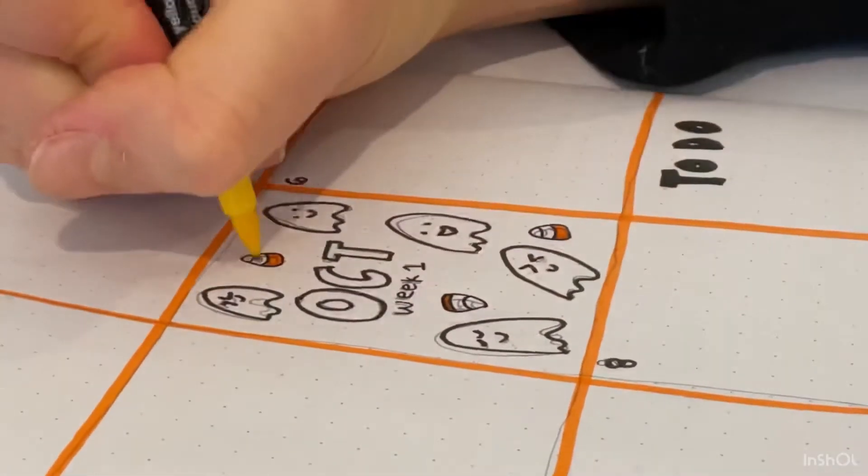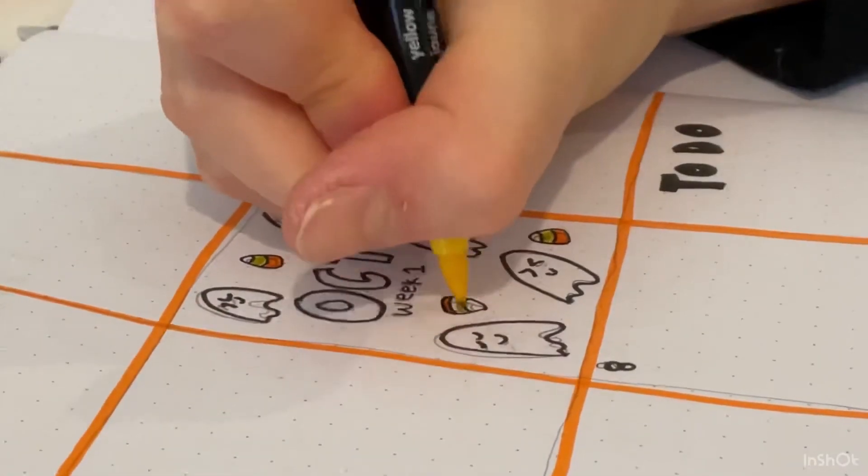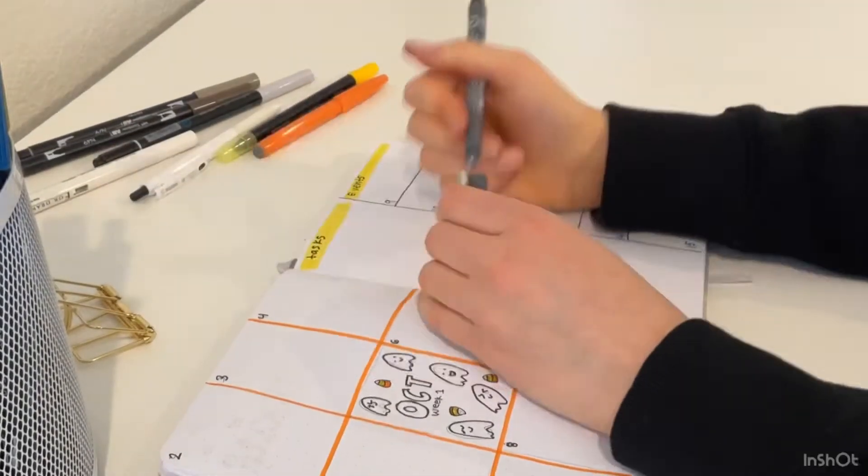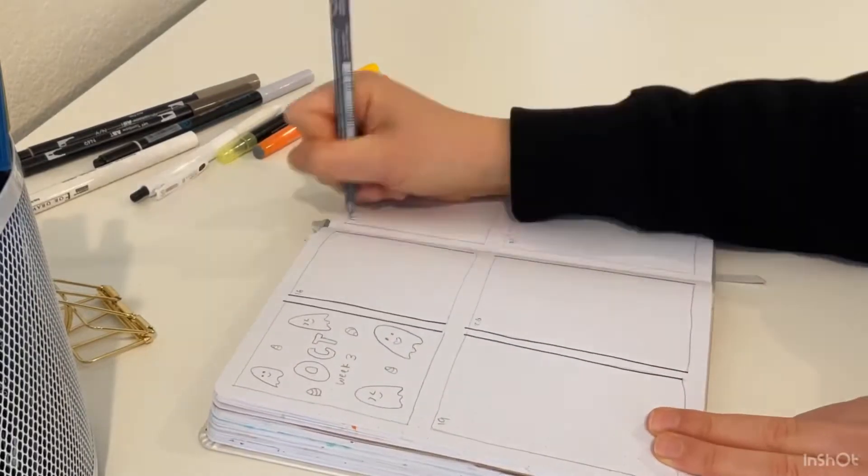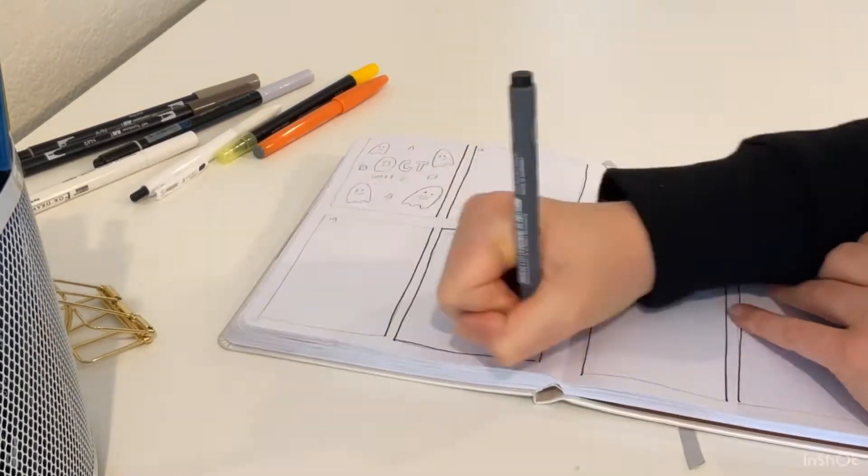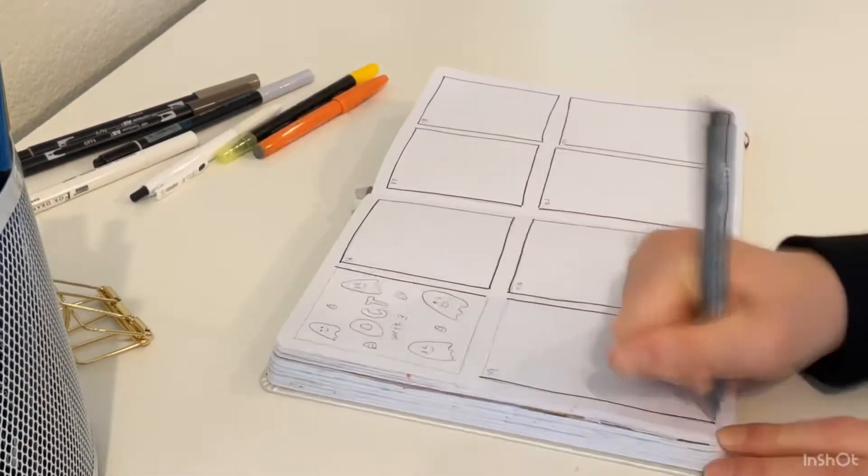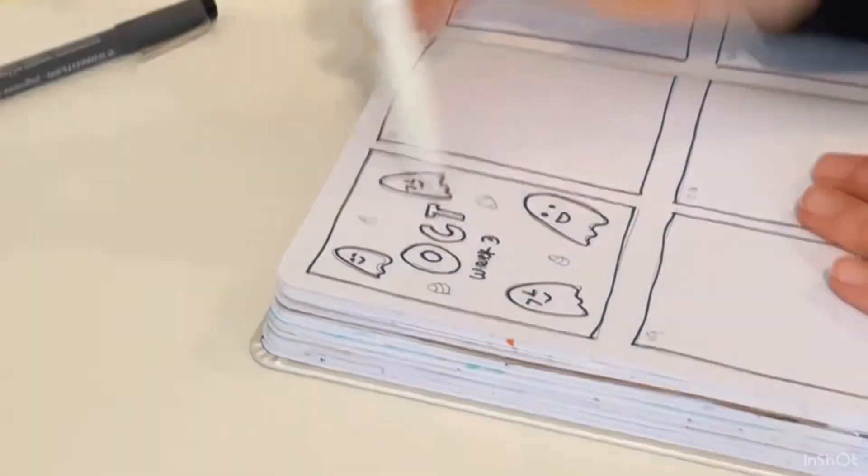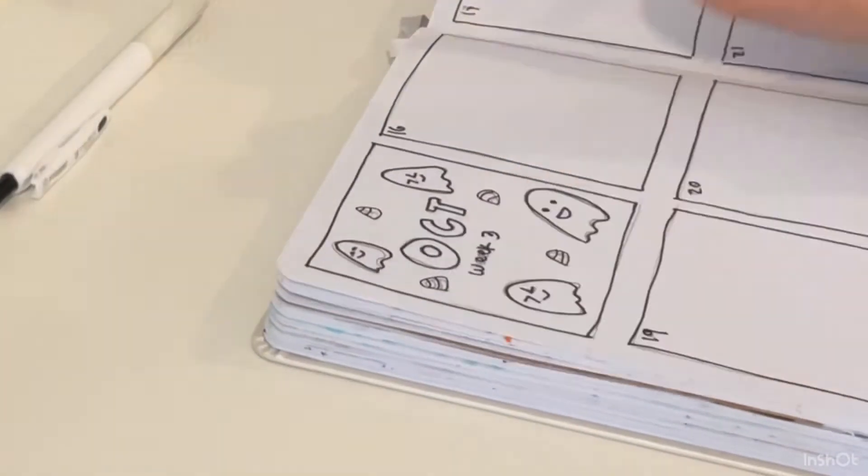Now we are going to work on the second weekly spread of the month. This is my go-to weekly spread - I use it a lot in my own bullet journal. I have a task section and events. Now the third weekly spread of the month - this one is much more larger with lots of space and a cute little collage up here at the top with October, week three, some ghosts and candy corn.